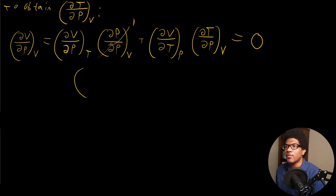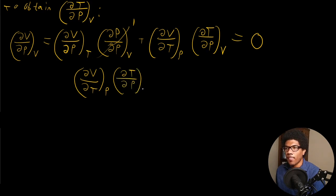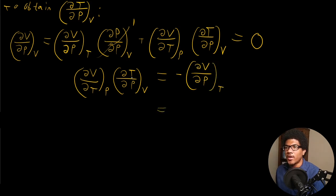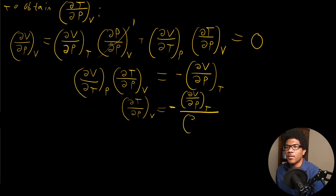Moving one term to the right-hand side, we're left with (∂V/∂T) at constant P times (DT/DP) at constant V, equals negative (∂V/∂P) at constant T. Then we isolate DT/DP at constant V — it's going to be equal to negative (∂V/∂P) at constant T, over (∂V/∂T) at constant P.